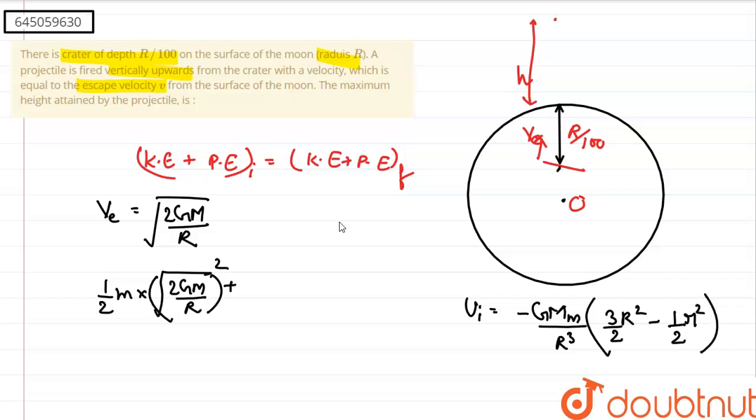Now this distance also we need because this is complete r and this is r by 100. This would be r minus r by 100, that is 99r by 100. Now writing the potential energy of the initial case, it would be minus Gm by r cube into 3 by 2 r square minus 1 by 2, the distance from the center, which we just found out is equal to 99 by 100 or 0.99 capital R whole square, bracket closed.